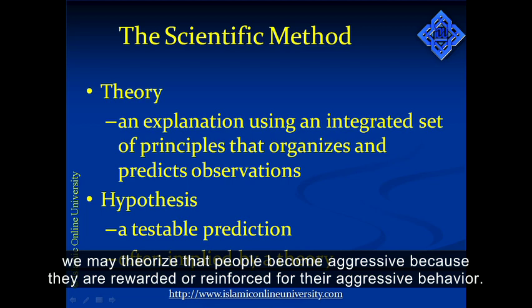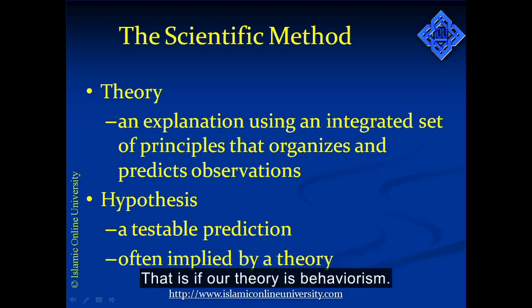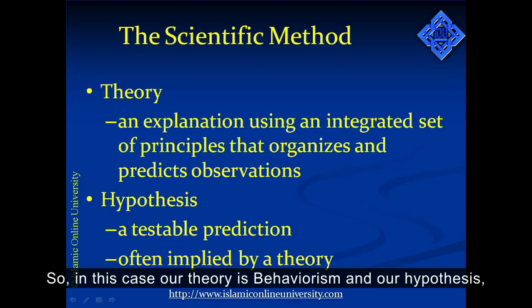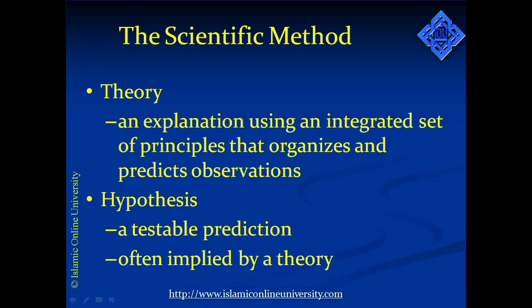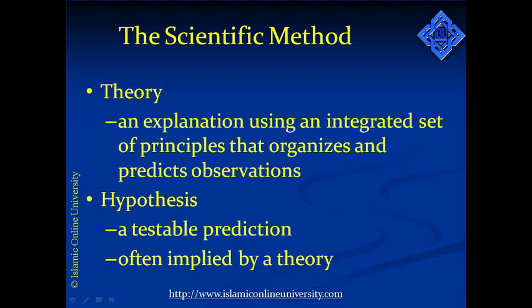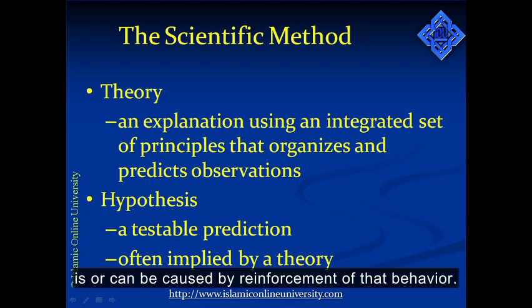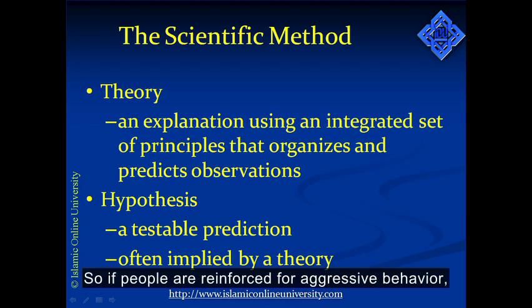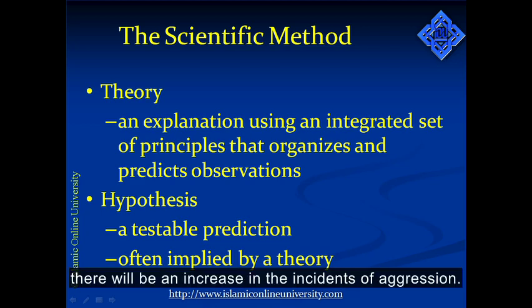If we take the example of aggression, we may theorize that people become aggressive because they are rewarded or reinforced for their aggressive behavior, if our theory is behaviorism. In this case, our theory is behaviorism and our hypothesis — which is a testable prediction — will be specifically that aggressive behavior is caused by, or can be caused by, reinforcement of that behavior. So if people are reinforced for aggressive behavior, there will be an increase in the incidence of aggression.